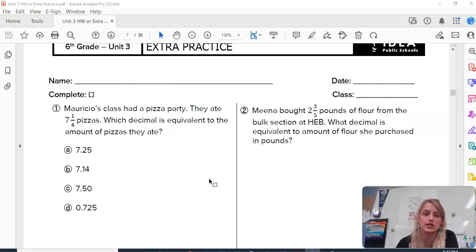Mauricio's class had a pizza party. They ate seven and one-fourths pizzas. So we need to figure out what decimal is the same as seven and one-fourth. So seven is a whole number and one-fourth or one-quarter is our fraction, which means that we are going to be looking for something that has seven wholes. Like, you can see the seven in this ones place.